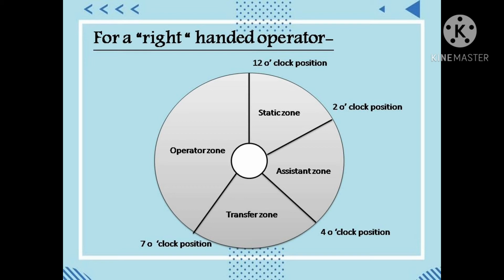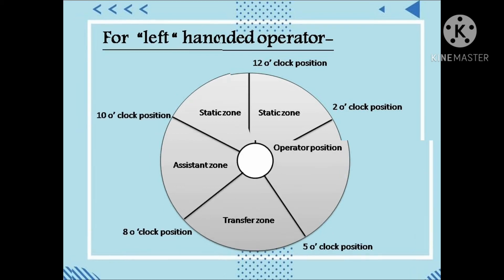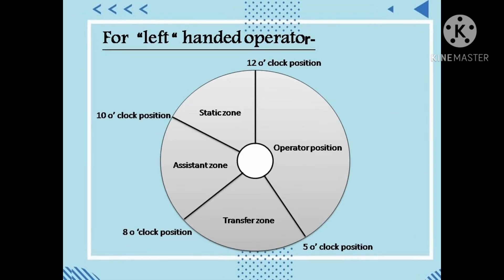For a left-handed operator, the clock positions differ. The operator zone is from 12 o'clock to 5 o'clock, the transfer zone from 5 to 8 o'clock, the assistant zone from 8 to 10 o'clock, and the static zone from 10 o'clock to 12 o'clock.